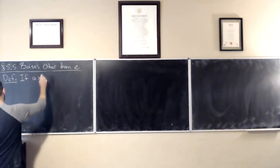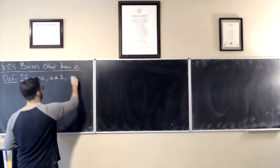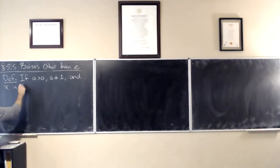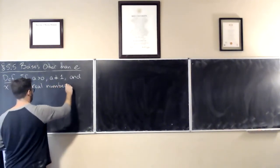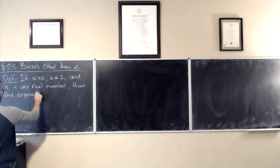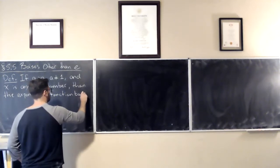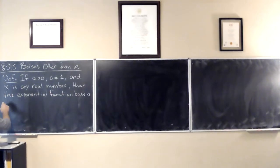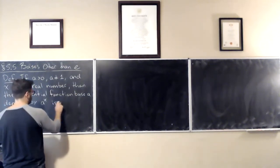So if a is greater than 0, a is not equal to 1, and x is any real number, then the exponential function base a, denoted by a to the power of x, is defined by: